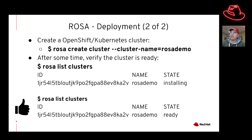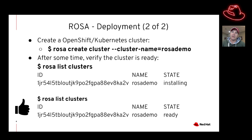I ran 'ROSA list clusters' twice — once while it was still installing, and you can see the state shows 'installing.' Then once it completed, I ran it again and it showed the state as 'ready.' At this point, I now have a full Kubernetes managed service running on AWS.